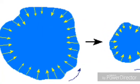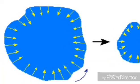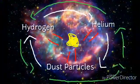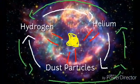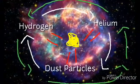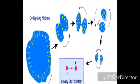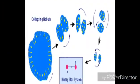Disturbances from events such as a passing star or a shockwave from a nearby supernova cause the nebula to shrink. As the nebula shrinks, gravity increases. As the nebula falls inward, gravitational potential energy is converted to heat.